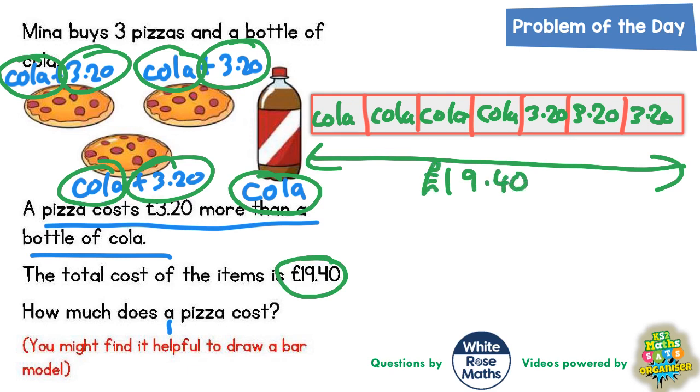Well, the next logical thing to do would be to take off these three lots of £3.20. So if we work out what three lots of £3.20 is, three lots of nothing is nothing, three twos are six, three threes are nine. So that's £9.60.